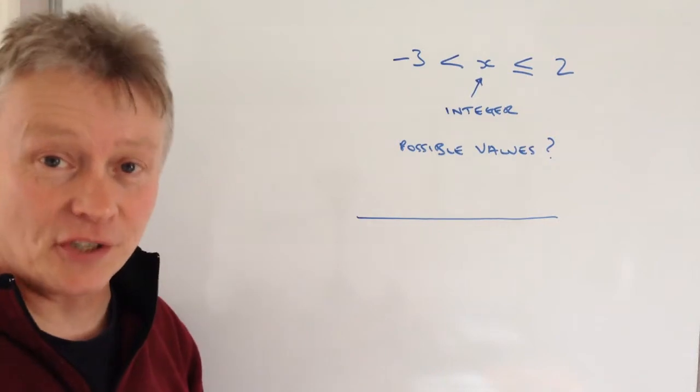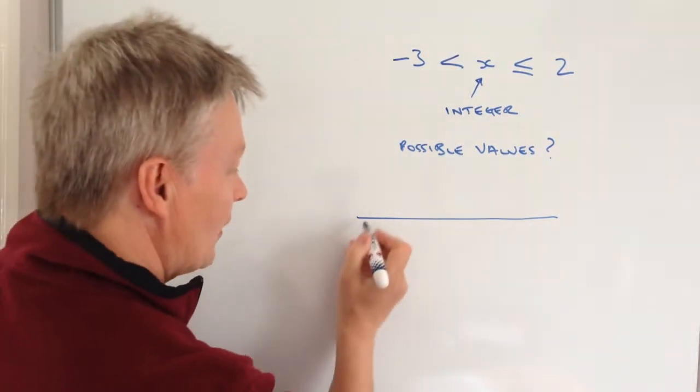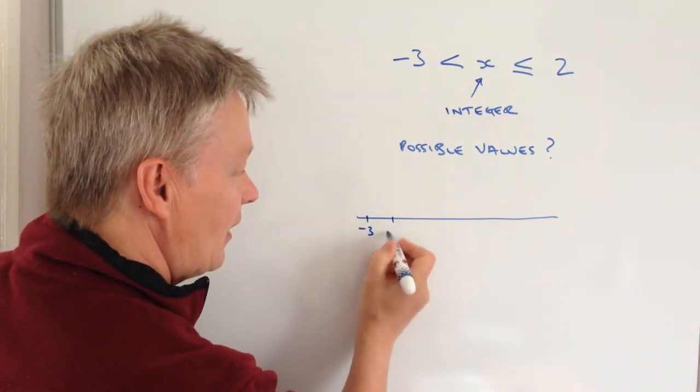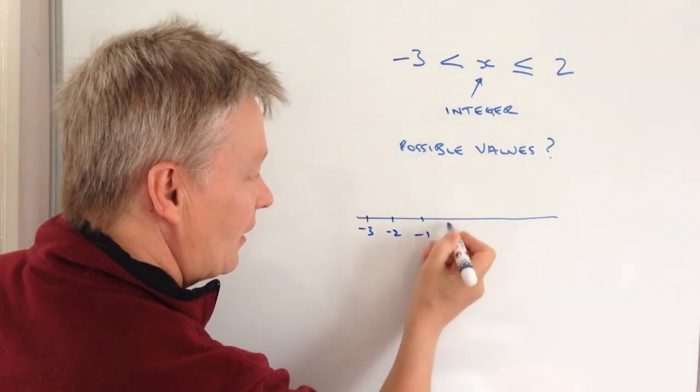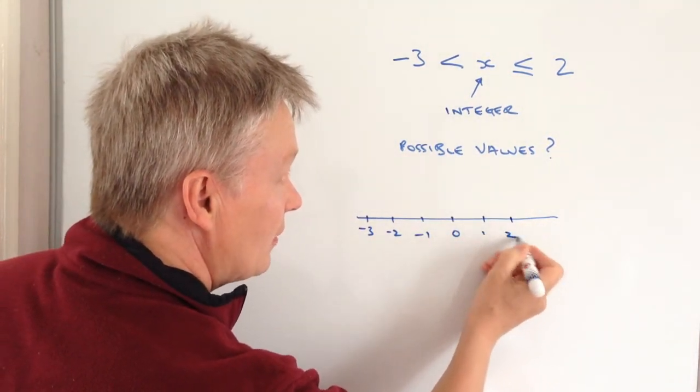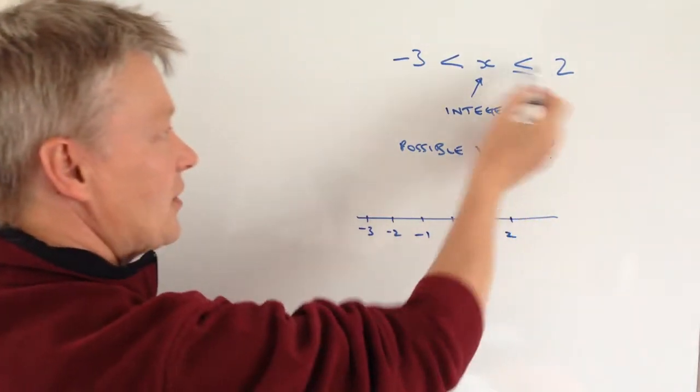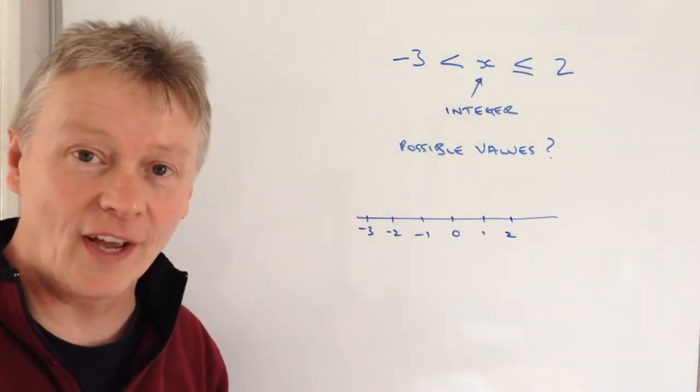So I've got -3, -2, -1, 0, 1, 2. And those are the two limits we've got there.